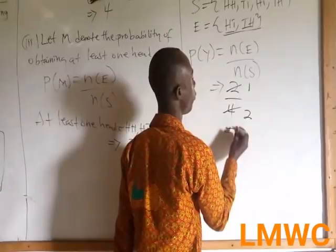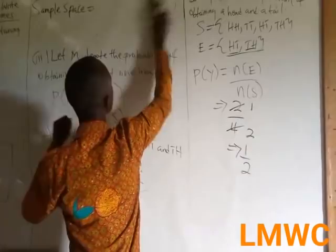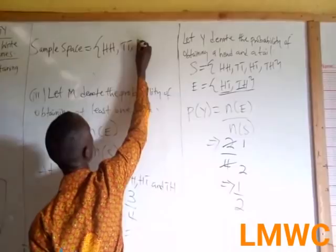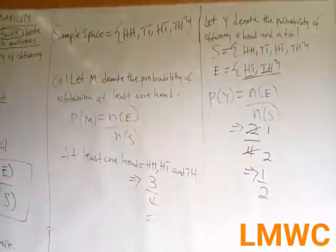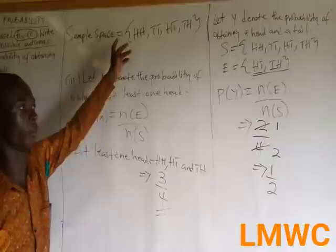So to summarize, our sample space was: Head-Head, Tail-Tail, Head-Tail, Tail-Head. That's why I was making more emphasis. This is a question on probability — a fair point. Thank you, and we shall meet for the next session.